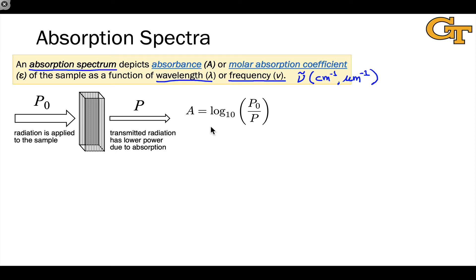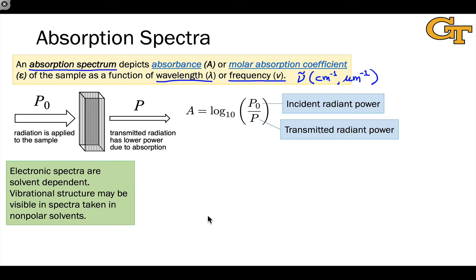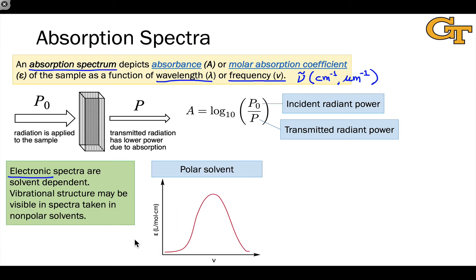Absorbance is the base-10 log of the incident power divided by the transmitted power of the light hitting the sample. Electronic spectra are profoundly solvent dependent. While we can look for broad features in an absorption spectrum to recognize electronic transitions between different electronic energy levels, if we want the vibrational structure — transitions to specific vibrational levels in the excited state potential energy surface — we need to make a judicious choice of solvent. In polar solvents, the vibrational structure is completely blurred out.